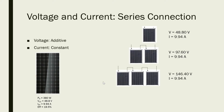Suppose we connect three solar panels in series. The voltage would be 48.8 volts times 3, which gives us 146.40 volts, and the current is still constant at 9.94 amperes.